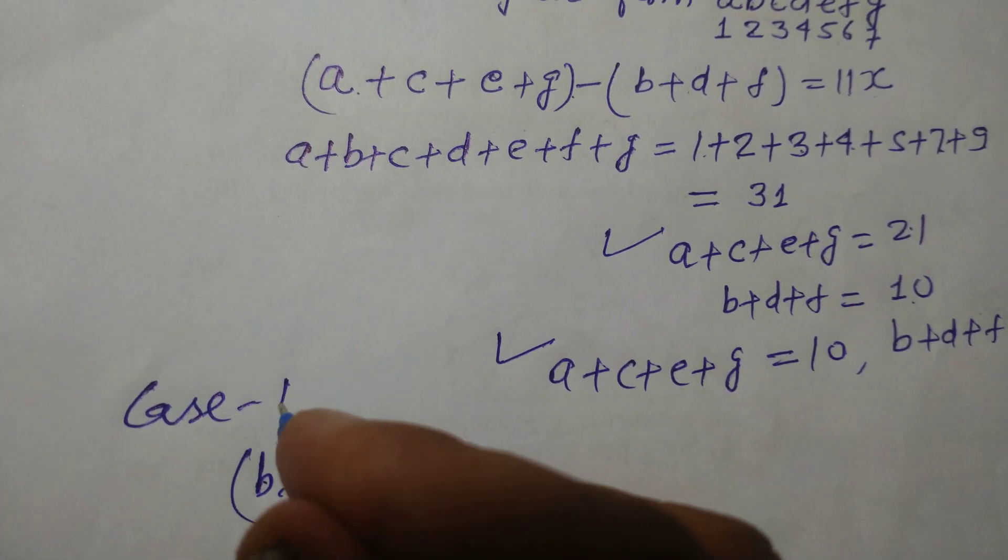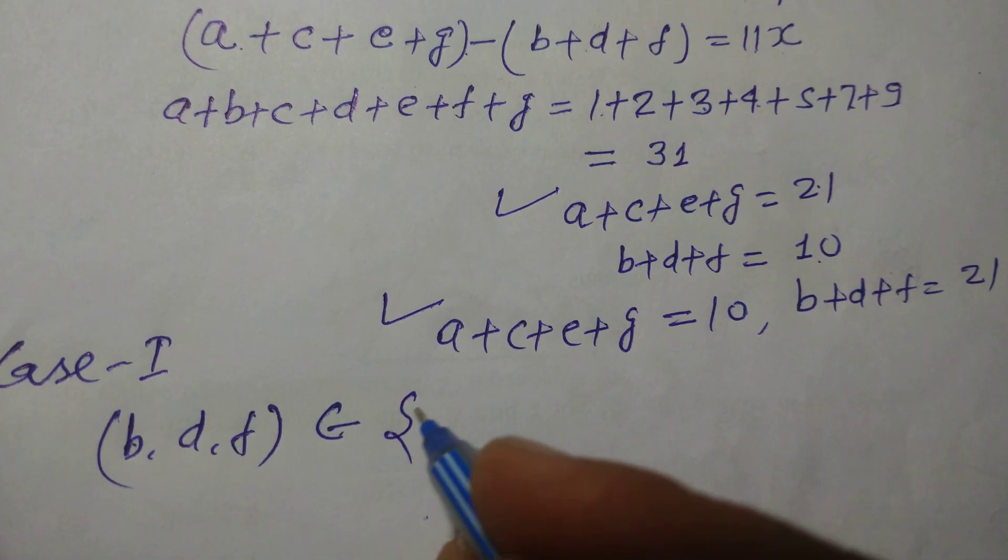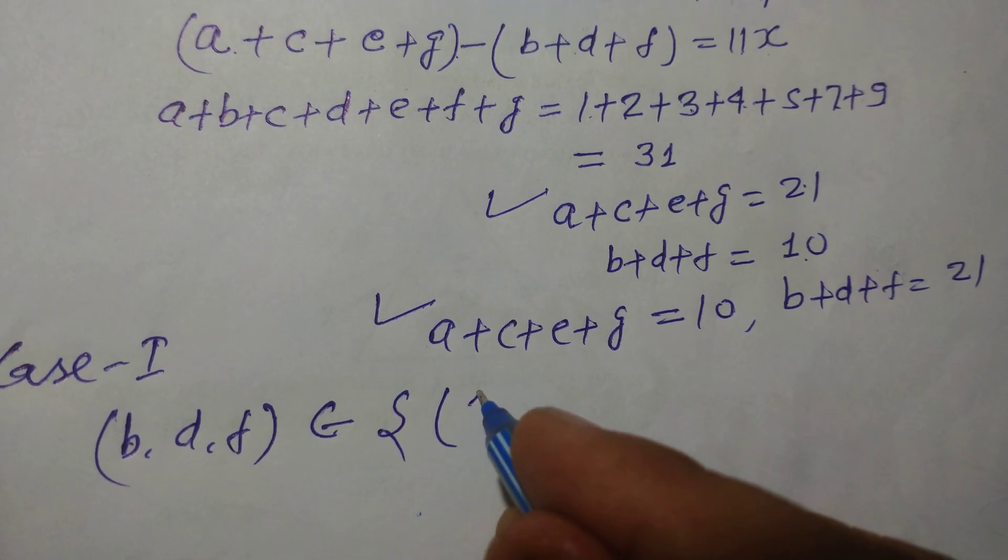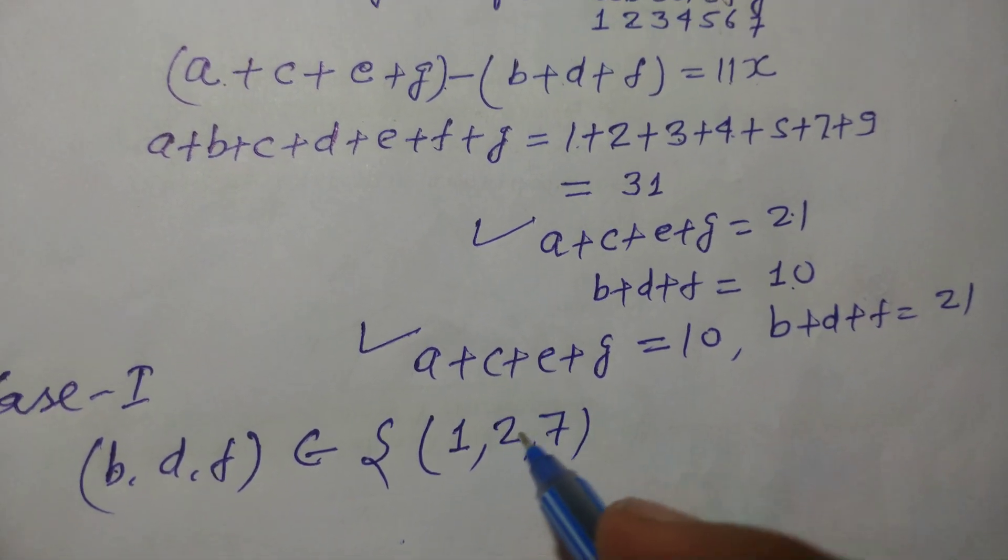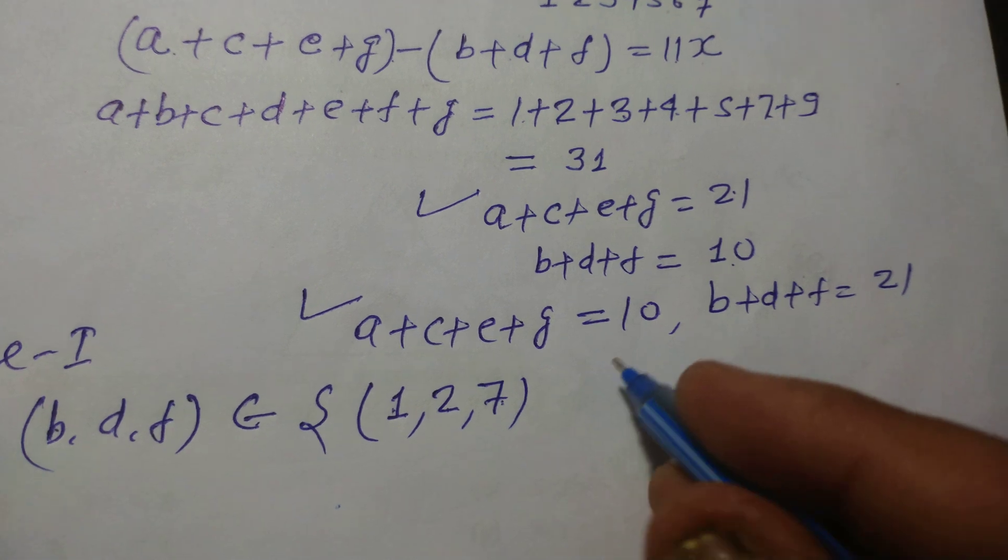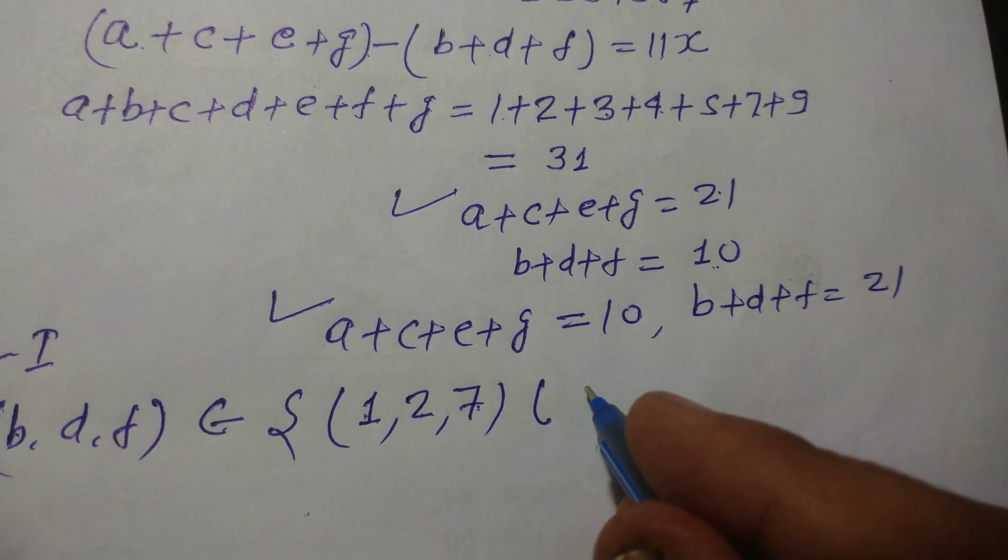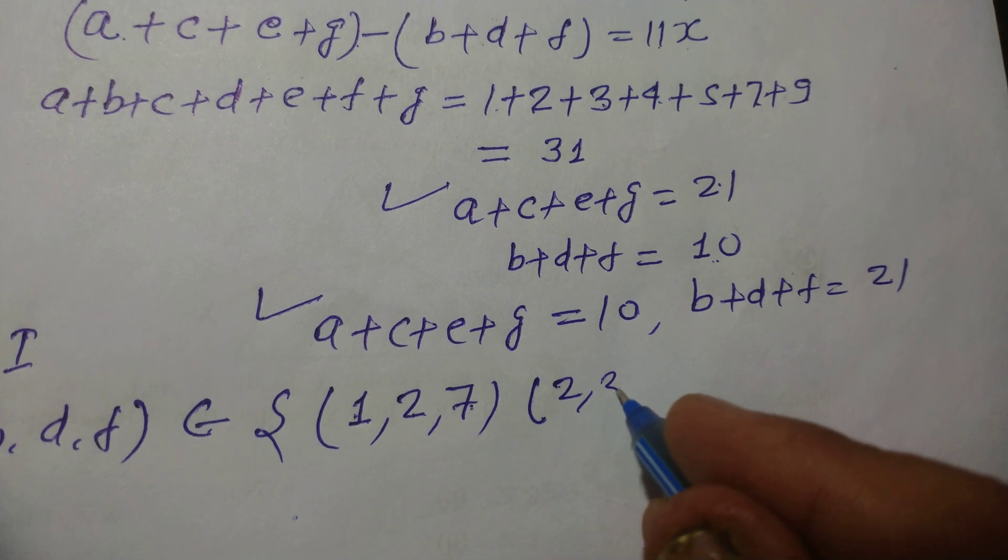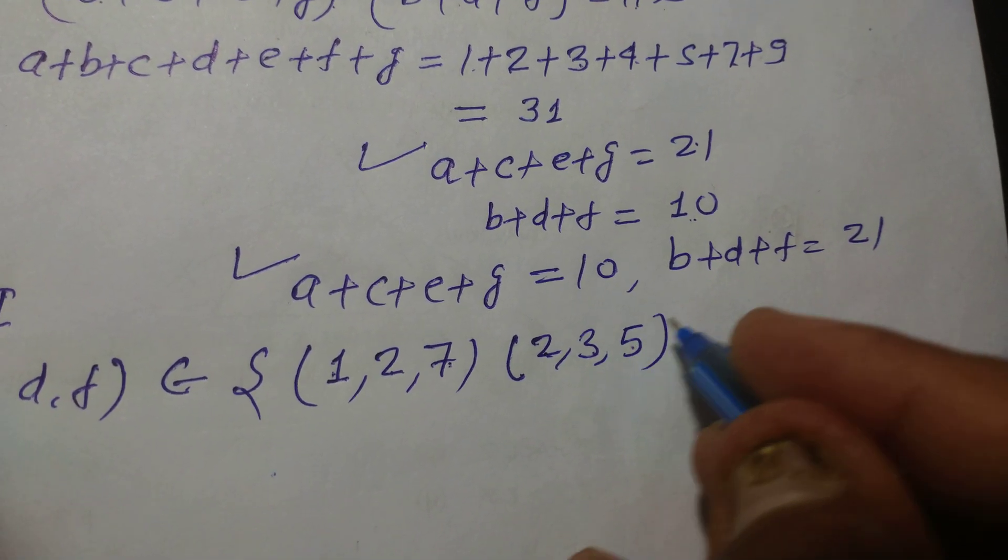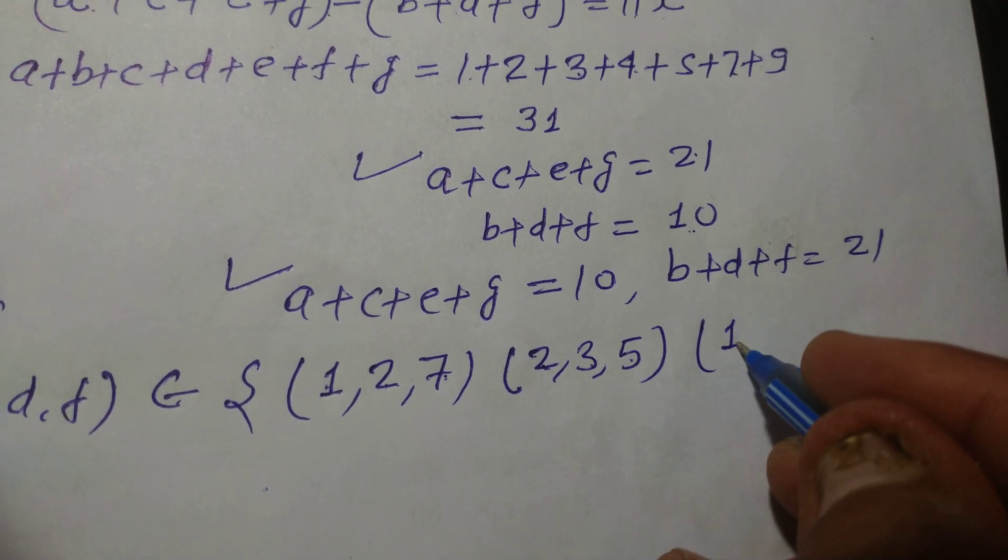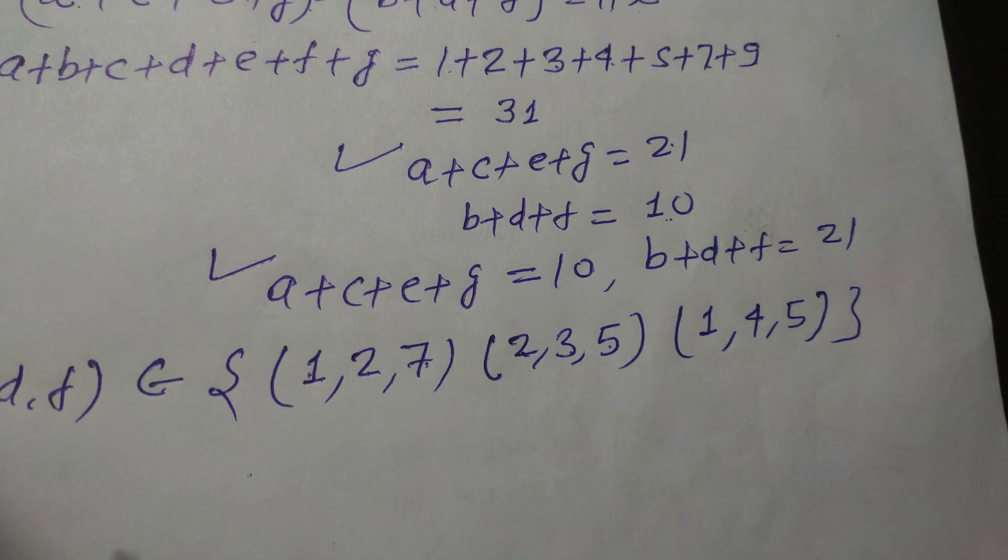Okay, so here we make the sets of these numbers to become 21 and 10. B, D, and F in first case. So case first: B, D, F belongs to the sets {1, 2, 7}, {2, 3, 5}, and {1, 4, 5}. So these are three elements in the set of B, D, F.